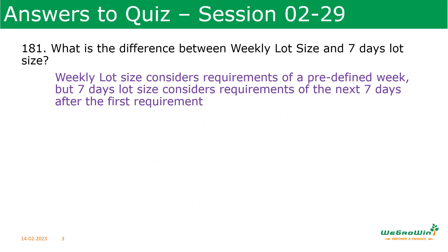What is the difference between weekly lot size and seven days lot size? Weekly lot size considers requirements of a predefined week — for example, if we define weekdays from Sunday to Saturday, the system will consider requirements between Sunday and Saturday. But seven days means it will start on any day and consider all requirements for seven days from the date where the requirement is happening. The same thing applies for monthly lot size versus a lot size of 30 or 31 days.